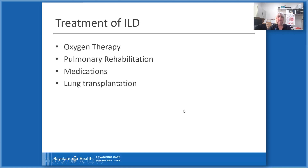Treatment for interstitial lung disease includes several approaches: oxygen therapy, pulmonary rehabilitation, medications, and lung transplantation.